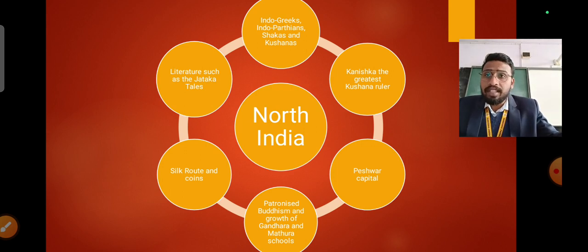The foreign invaders such as the Indo-Greeks, the Indo-Parthians, the Shakas and the Kushanas. Later when they came and started building their own empire here we are going to learn about a Kushana ruler whose name is Kanishka.